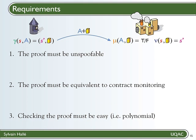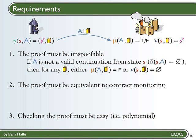And by easy, we mean running in polynomial time. These requirements can be translated formally into conditions on the functions gamma, mu, and nu. An unspoofable proof means that if the message A is not a valid continuation from state S, then whatever proof you produce is either a spoof which will be rejected by function nu, or if the proof is genuine, then it will lead the server into the empty state and make it realize that it doesn't follow the protocol. So either way, you can't have the server accept message A, so you're safe.